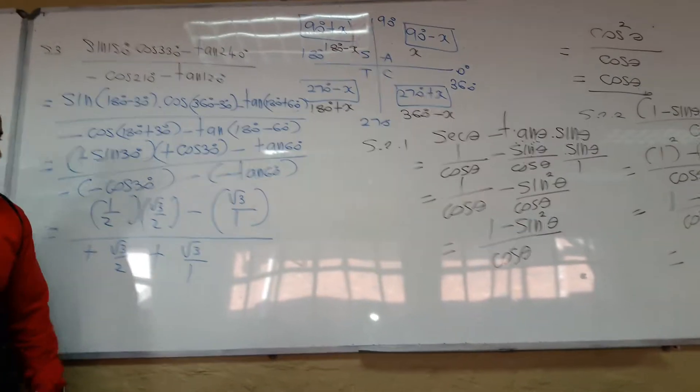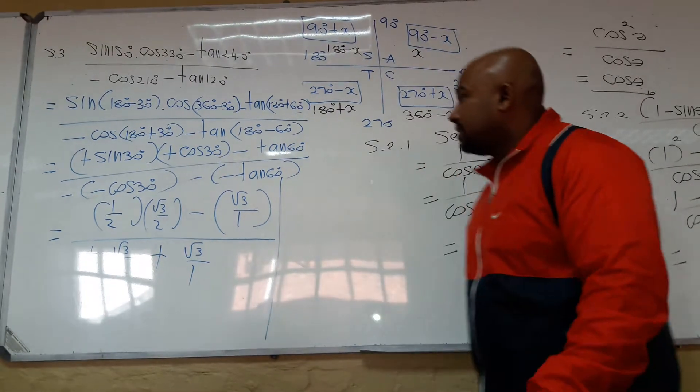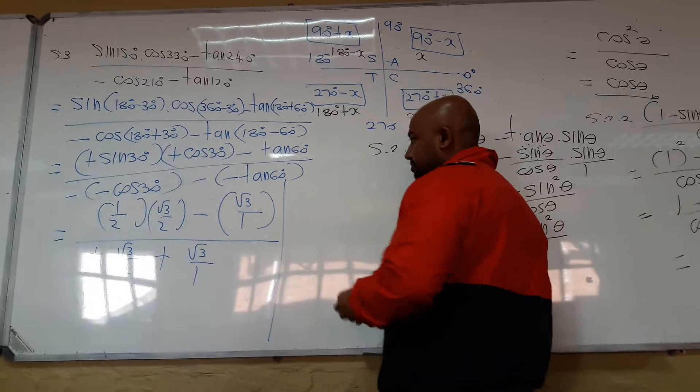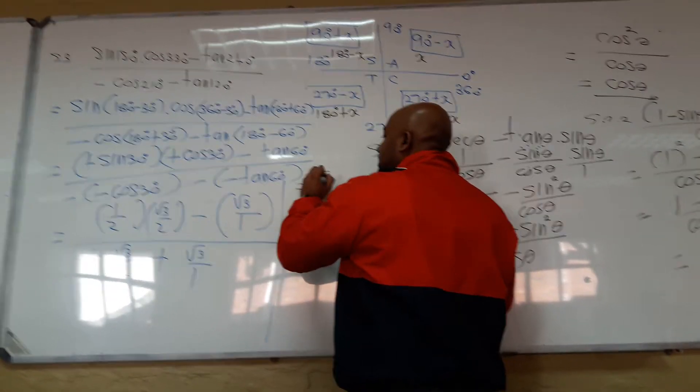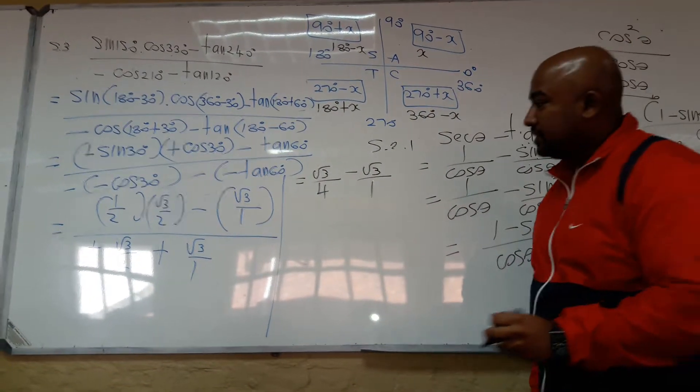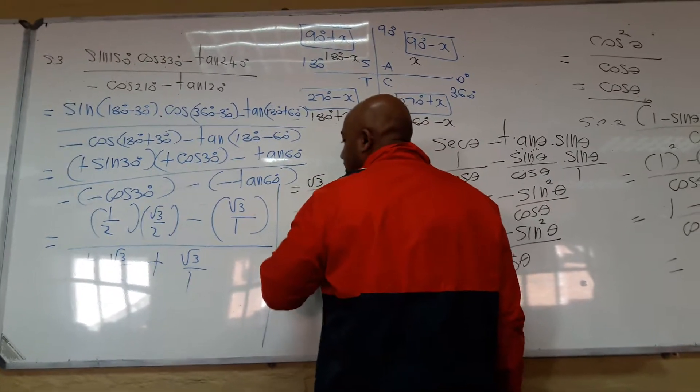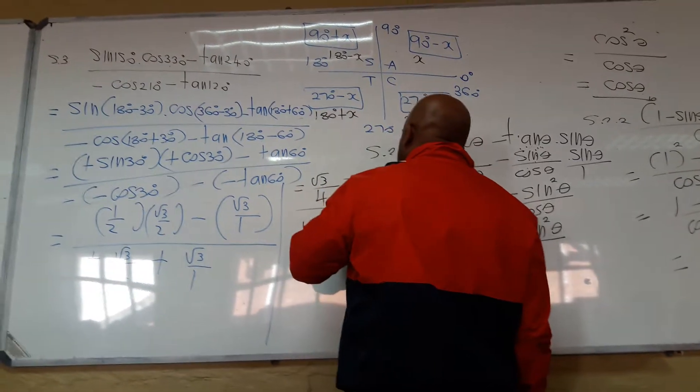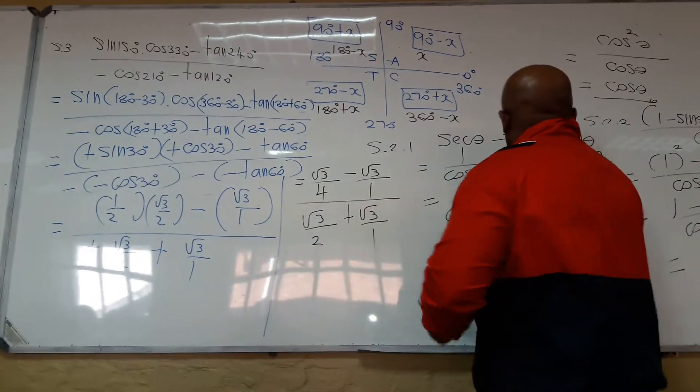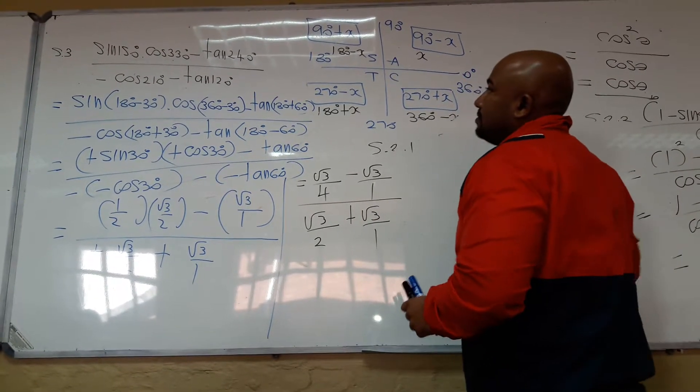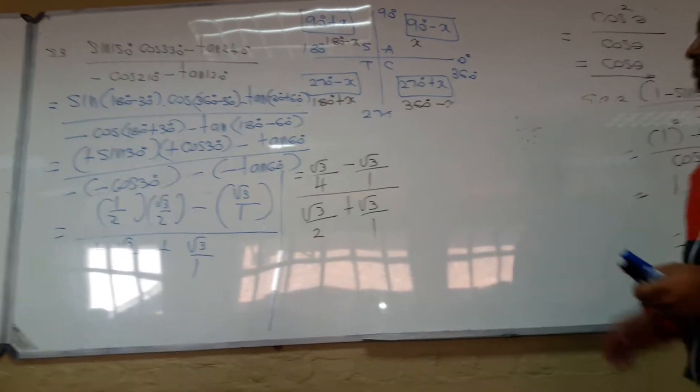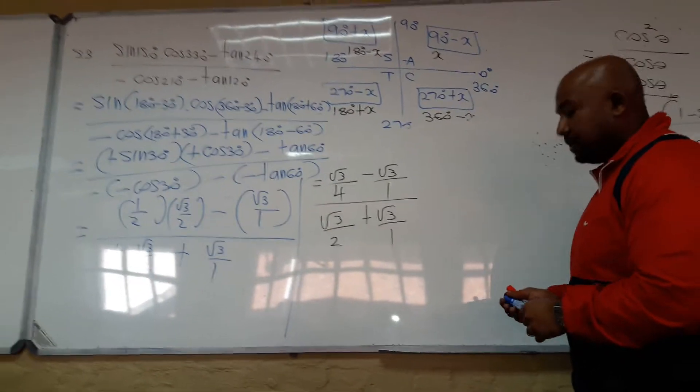You all got that? Okay. Let's work it out. So on the top, what do I have now? I got square root 3 over 4 minus square root 3 over 1 on the top. Can you see that? In the bottom, I have square root 3 over 2 plus square root 3 over 1. Without a calculator. Let's work it out.